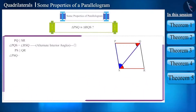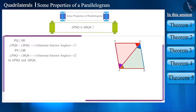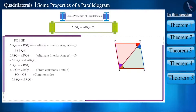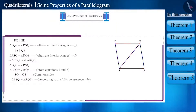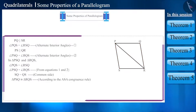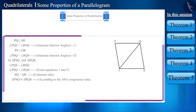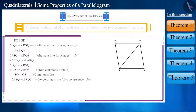Looking at triangles PSQ and RQS, two pairs of angles are equal and side SQ is the common side. Therefore both these triangles are congruent according to the ASA congruence rule. So diagonal QS divides parallelogram PQRS into two congruent triangles. Similarly diagonal PR also divides the parallelogram into two congruent triangles. This is a theorem: a diagonal of a parallelogram divides it into two congruent triangles.